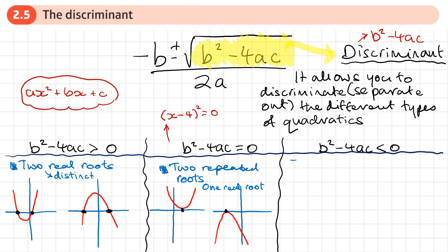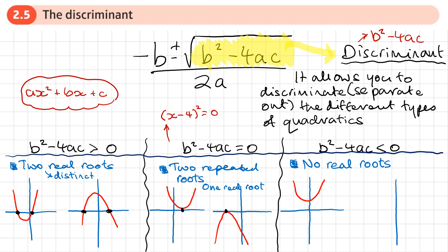In the last case, where b squared minus 4ac is less than zero — a negative number — we're going to end up trying to take the square root of a negative number. We won't have any real roots. We use the word 'real' because in further maths there are imaginary roots, but that's beyond normal A-level. With no real roots, a u-shaped quadratic doesn't touch or cross the x-axis at all, and an n-shaped quadratic sits entirely below the x-axis.